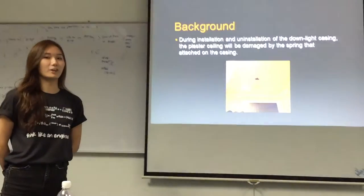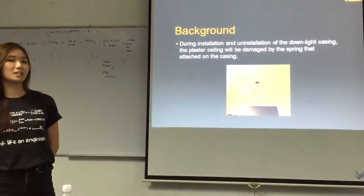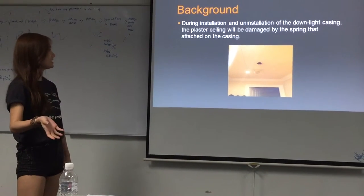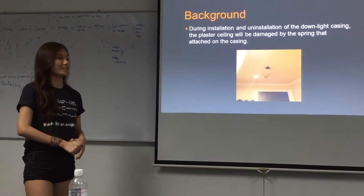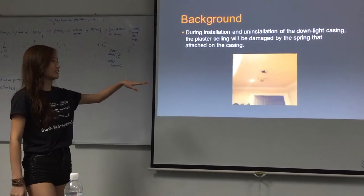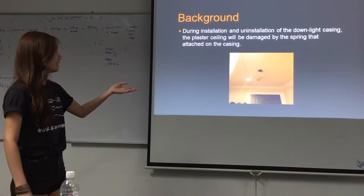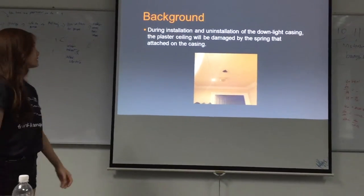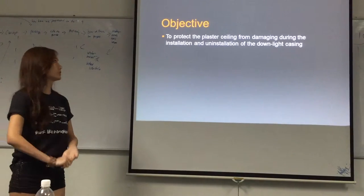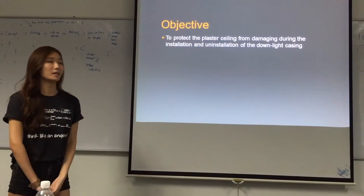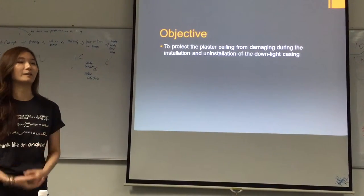This is a brief background on our project. During installation and uninstallation of the downlight casing, the plaster ceiling will be damaged by the screw. This picture shows an example of how the plaster ceiling is damaged. Our main objective is to protect the plaster ceiling from damage during the installation and uninstallation of the downlight casing.